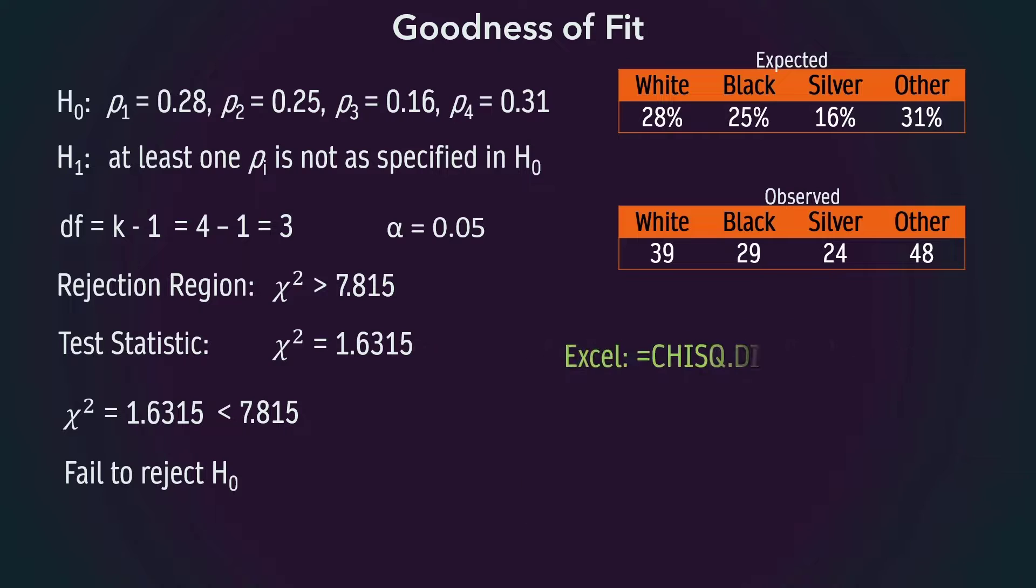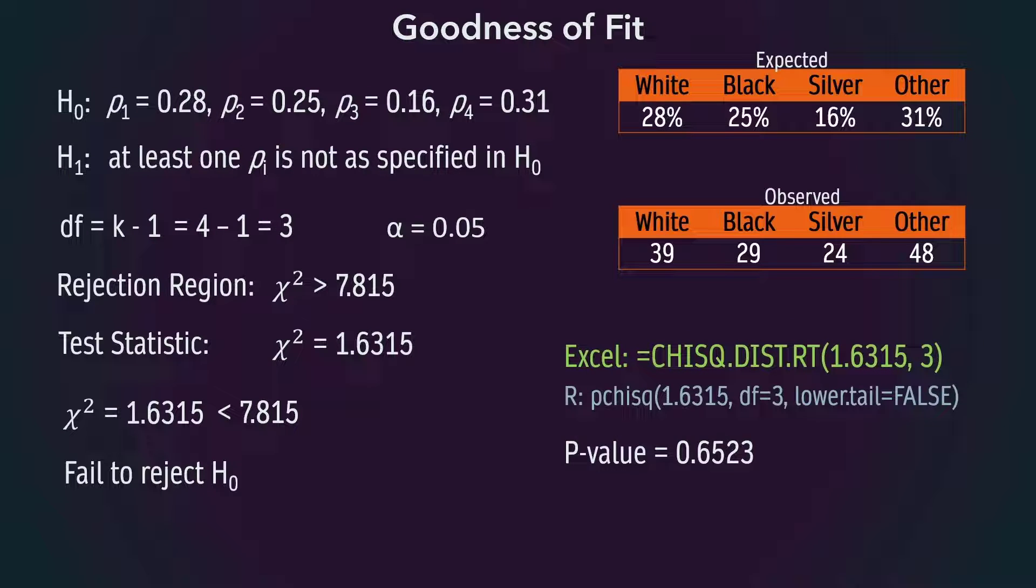Using software, we can obtain the exact p-value to be 0.6523. Recall that the p-value rule is, if the p-value is less than alpha, we reject the null hypothesis.